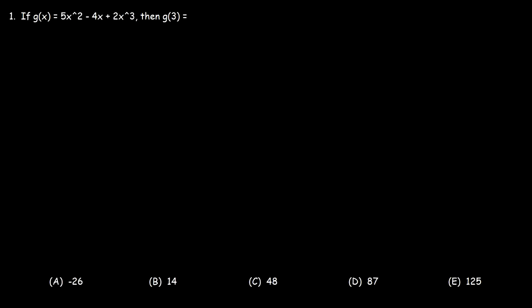Let's start with this problem. If g of x is equal to 5x squared minus 4x plus 2x cubed, then what is g of 3? So all we need to do is evaluate the function. We need to replace x with 3.